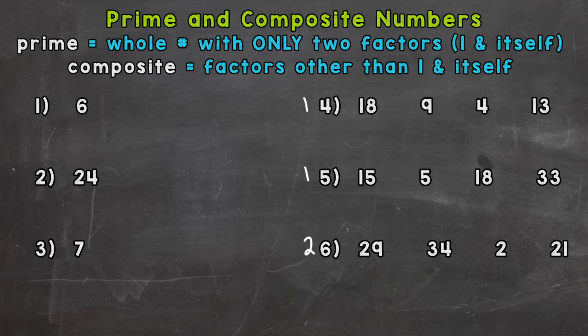So number one, we have a six. We need to determine if that's prime or composite. So let's think of all the factors of six. Which numbers can we multiply together to equal six? So I know that I can do one and six to equal six, right? One times six or six times one.